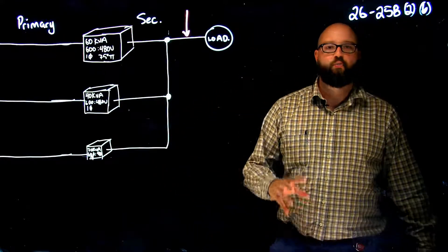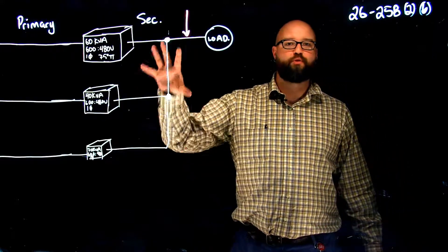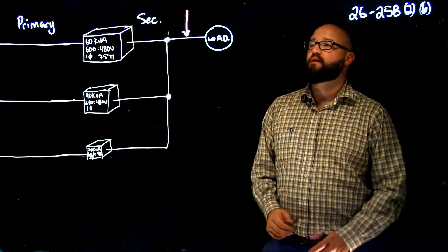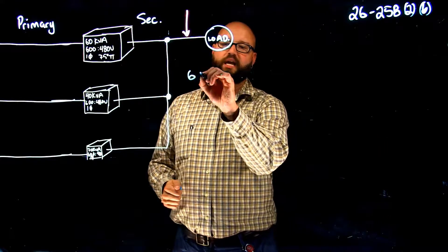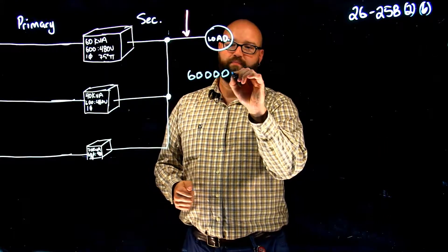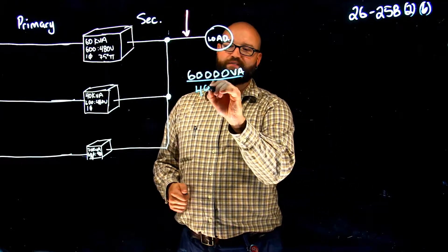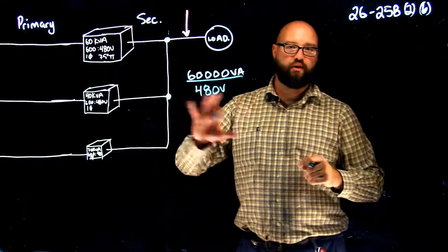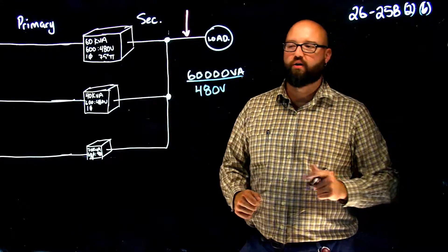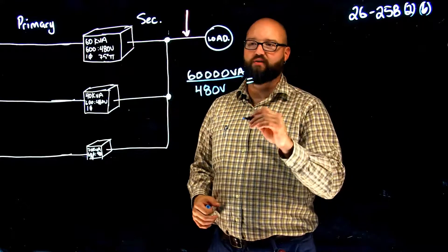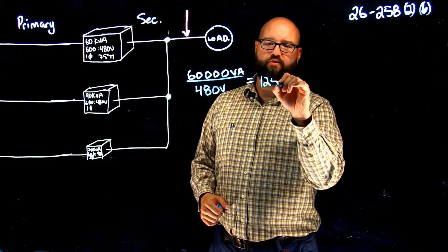So first thing we need to figure out what is the rated secondary current of each one of these transformers. We're not going to worry about the primary, just the secondary. So our first one we have our 60 kVA divided by my secondary voltage of 480 volts, and again we do not need to use the root 3, it's just single phase calculation, gives us a rated secondary current on our 60 kVA of 125 amps.